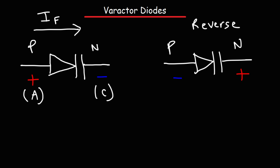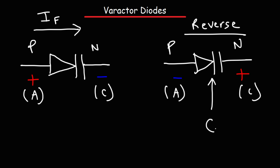The varactor diode is a special type of diode. All diodes have some junction capacitance when reverse biased, but the varactor diode has a very high junction capacitance, making it useful as a voltage-controlled capacitor. The capacitance is controlled by the amount of reverse voltage applied to the device. When you apply the positive terminal of a battery to the cathode and the negative to the anode, it will have a measurable junction capacitance, represented by C sub T.